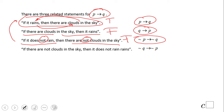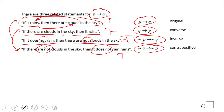And the last one: if there are no clouds in the sky, then it does not rain. If you notice, this one is similar to the converse, but with negation. Non-Q then non-P. And this one is true — if there are no clouds in the sky, then it does not rain. We have names: the original statement; when you flip them, we call it the converse; when you negate the original, we have the inverse; and when we switch and negate them, we have the contrapositive.